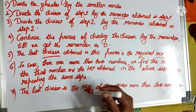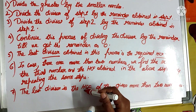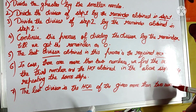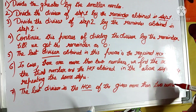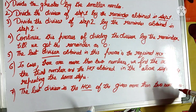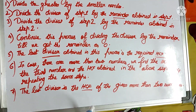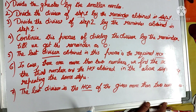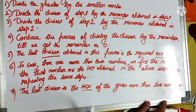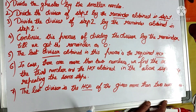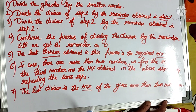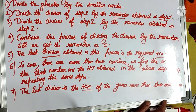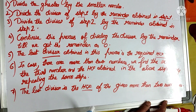The last divisor is the HCF of the given numbers — whether 2 or more than 2. It will be more clear to you when I explain with the help of an example.